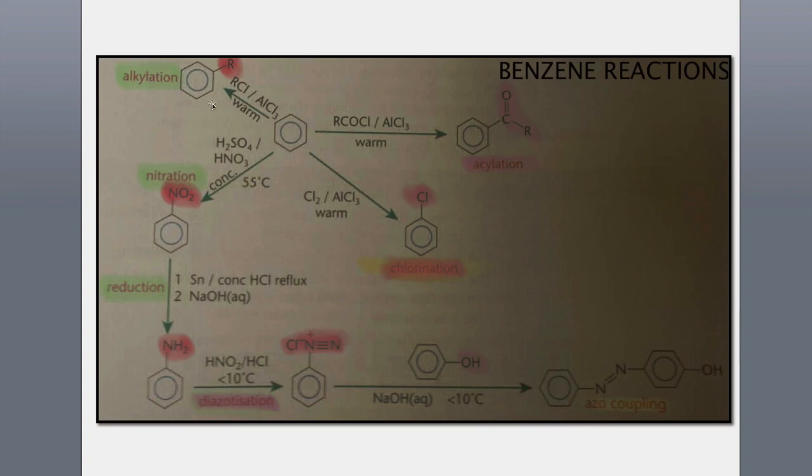We also have alkylation. For example, the R stands for a side chain. Let's say we want to add an ethyl group, in which case we will get ethylbenzene. The reagent that we would need to use would be bromoethane. Again it has to be in dry conditions in the presence of an anhydrous aluminium chloride catalyst.